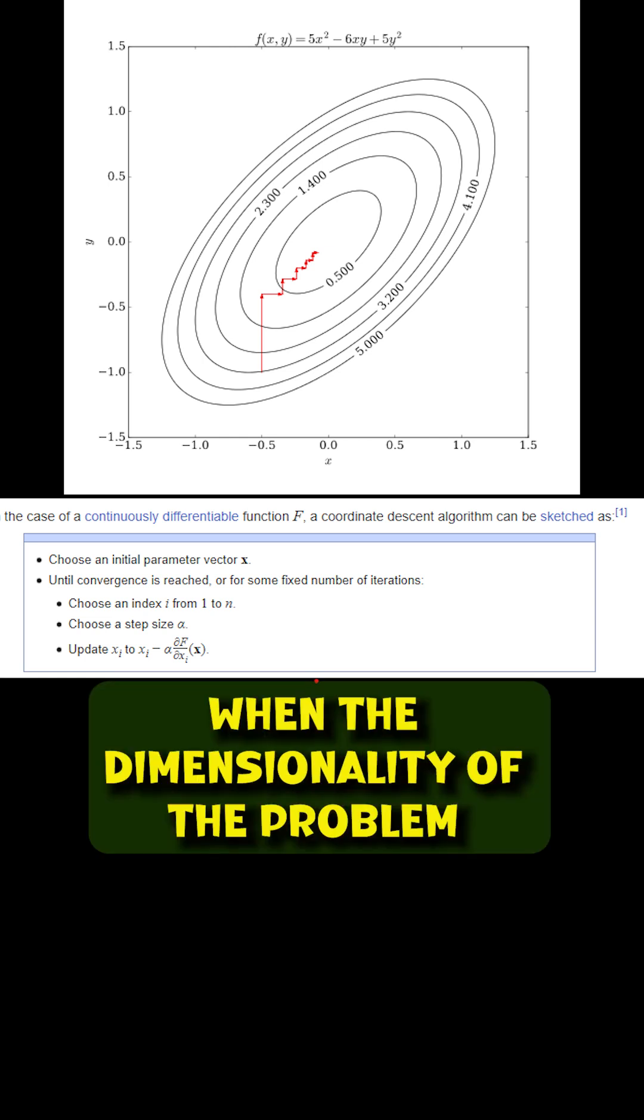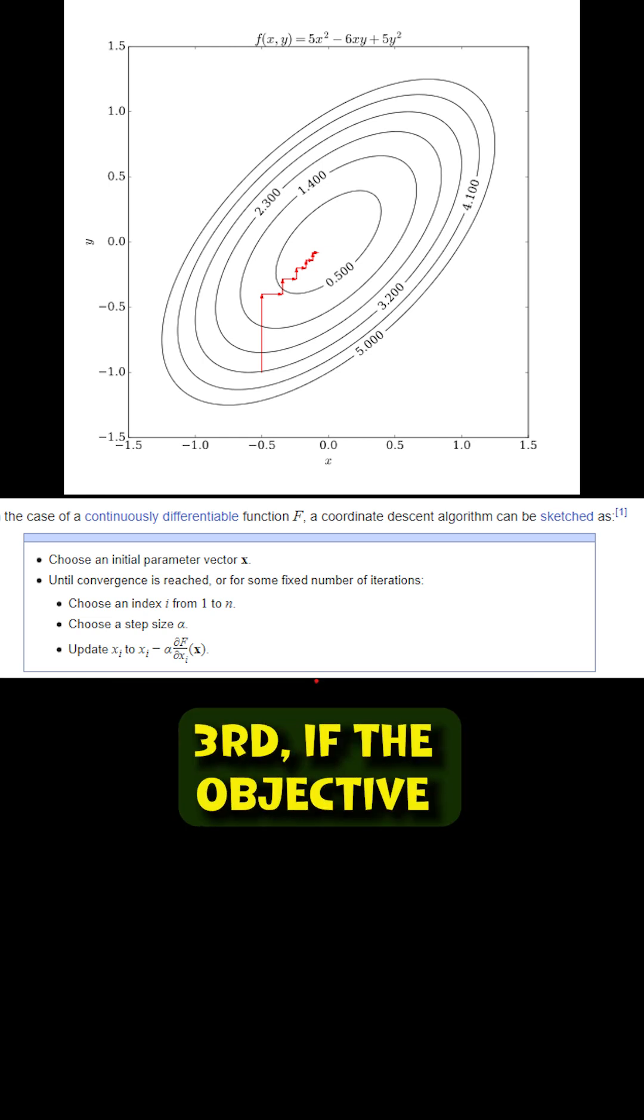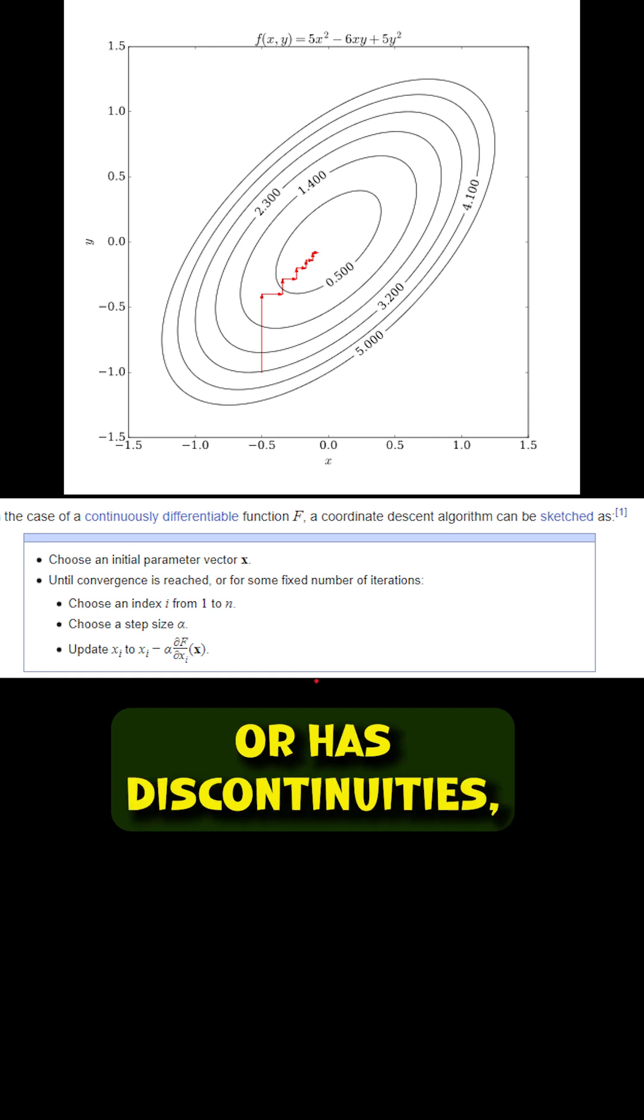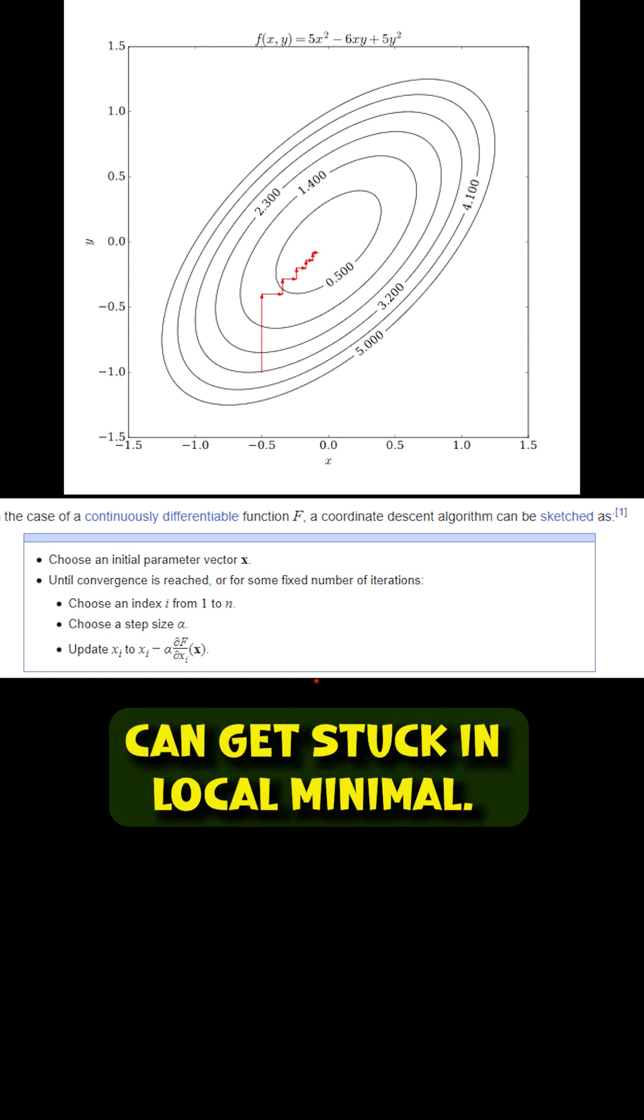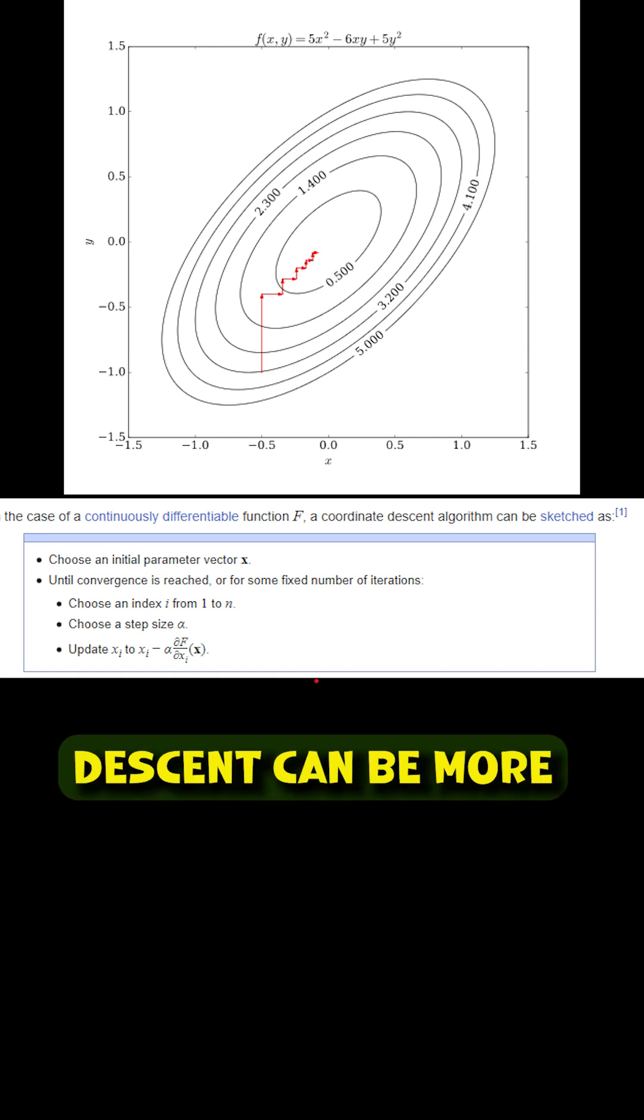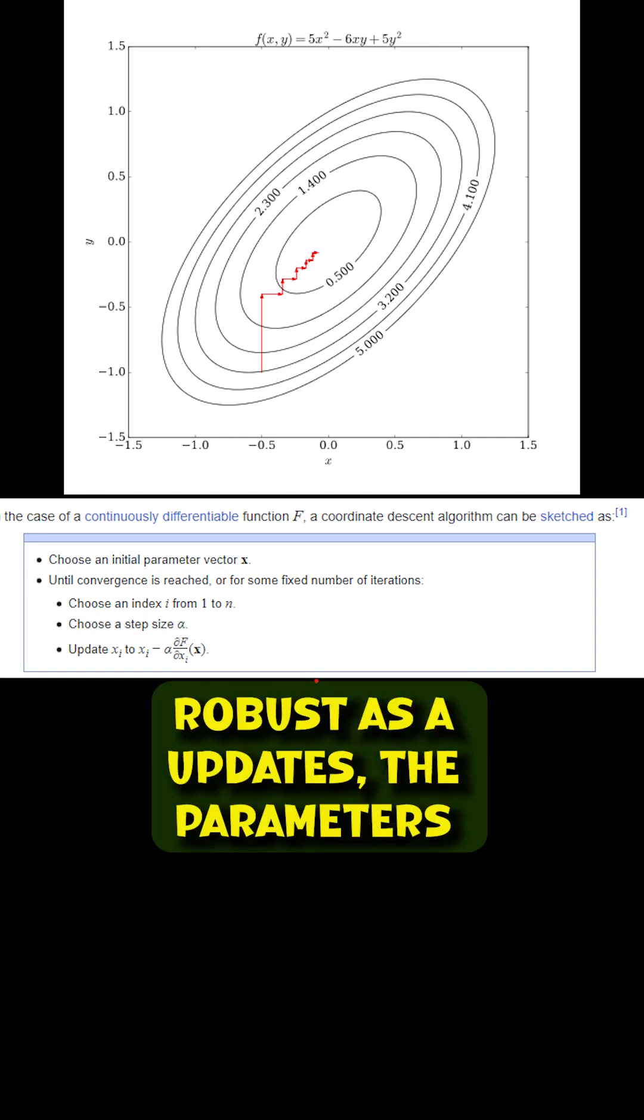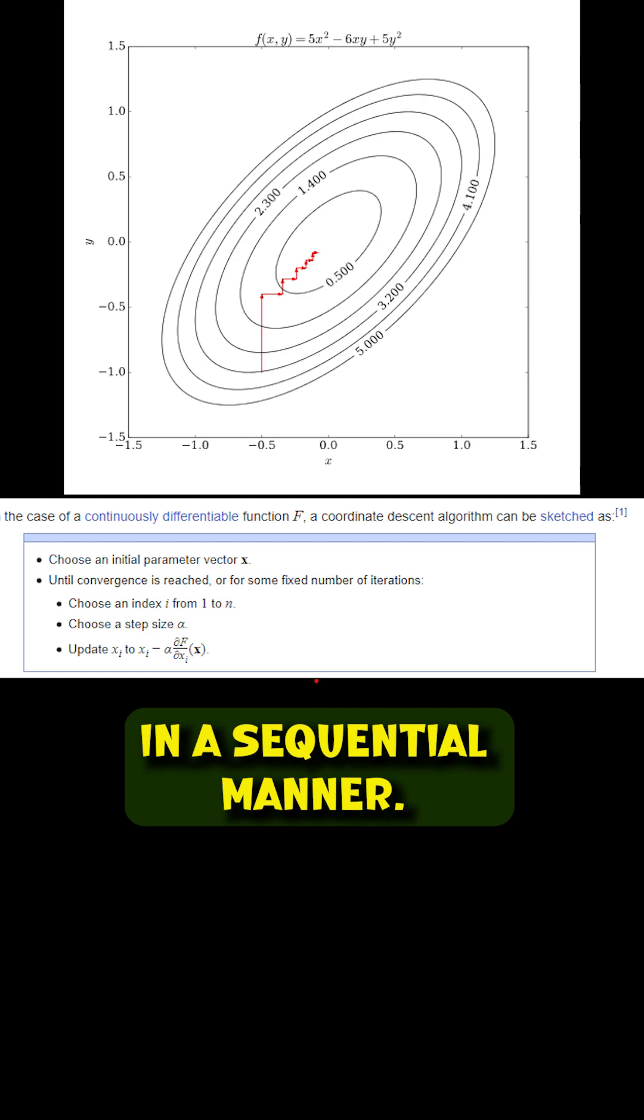Second, when the dimensionality of the problem is high. Third, if the objective function is not smooth or has discontinuities, gradient descent can get stuck in local minima. In such cases, coordinate descent can be more robust as it updates the parameters in a sequential manner.